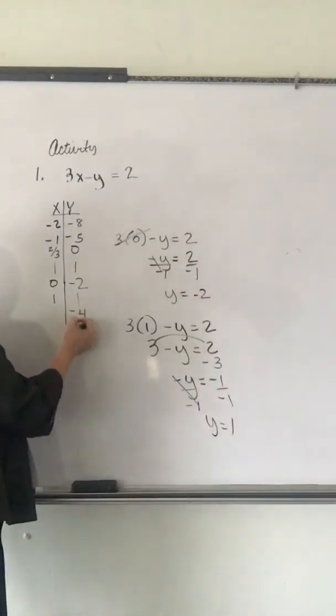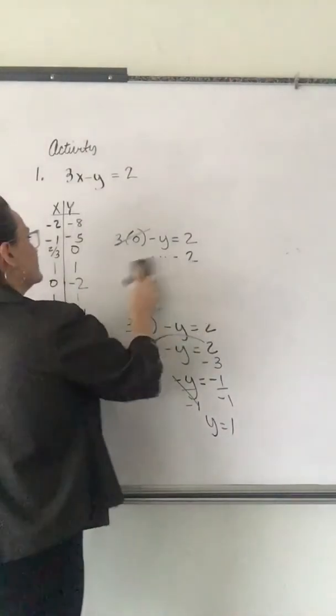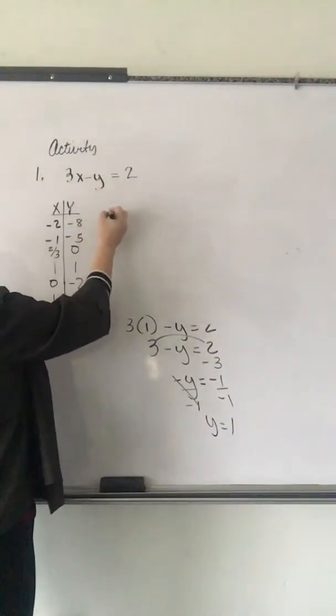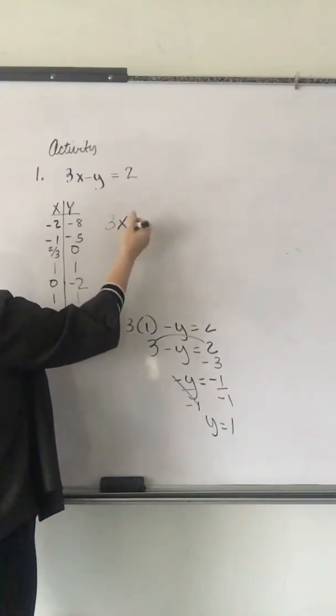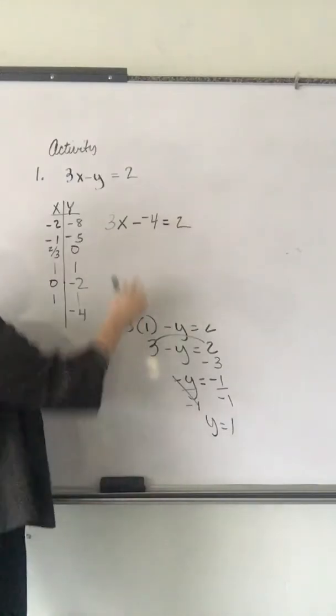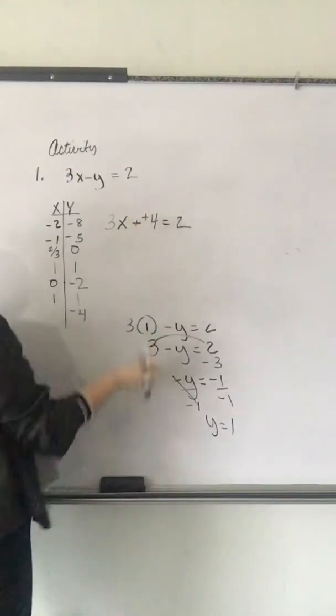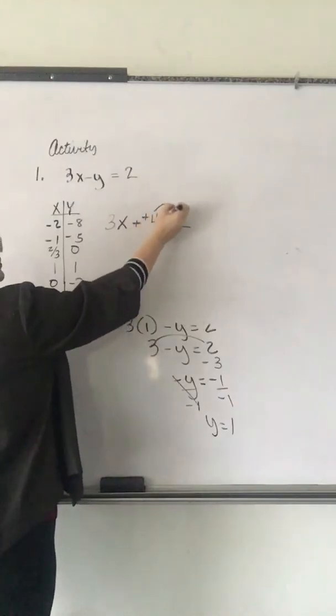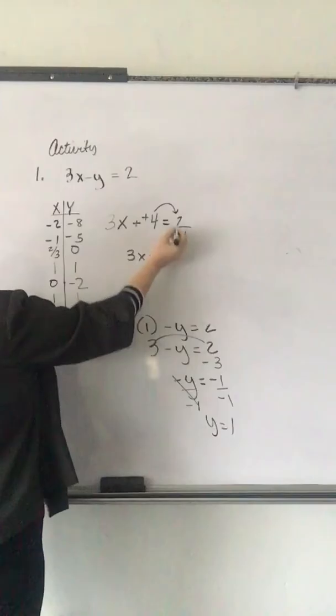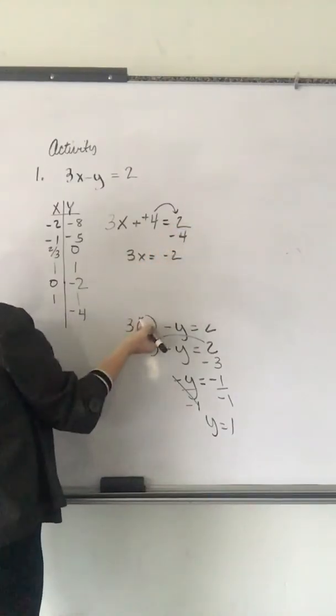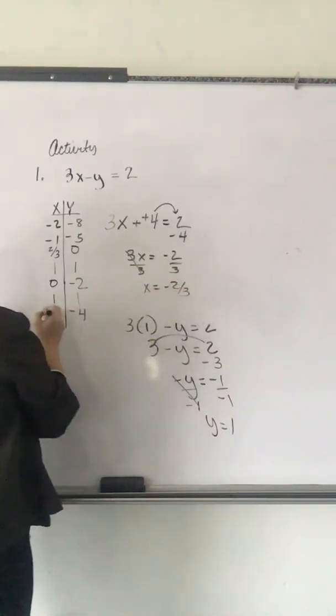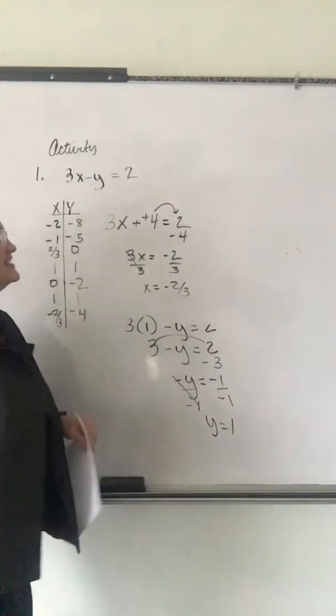One more example. We're going to plug in on the Y side. I'll plug in negative 4 for Y. So, it's 3X. I'm trying to figure out X. Subtract Y is negative 4 equals 2. So, this subtract the negative changes to plus. So, I've got a positive 4 to throw across the line, making it minus 4. And, 2 minus 4 is negative 2 divided by the 3, negative 2 thirds, a fraction. Let those happen, we said.